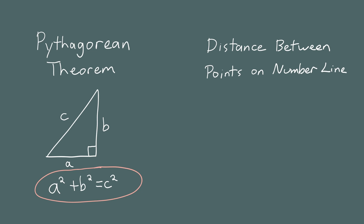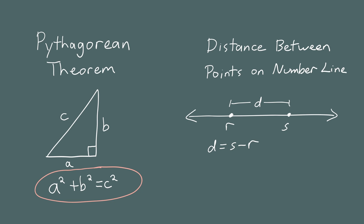Let's remind ourselves how to find the distance between points on a real number line. Suppose we have two numbers, r and s, and we want to find the distance between them. If you know that s is bigger than r, the distance is just s minus r. But in algebra you'll often work with variables where you won't know which is bigger, so you take the absolute value of the difference, which guarantees a positive number.